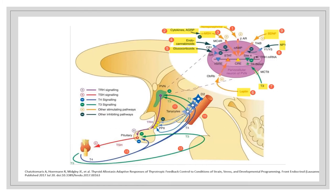This diagram from a 2017 published study depicts thyroid allostasis, showing the pituitary gland, the negative and positive feedback loops, TRH and TSH signaling, and other things that can affect this on a cellular level high up in the axis. Feel free to pause the presentation to take a closer look, and look up the paper online if you're interested in reading more.